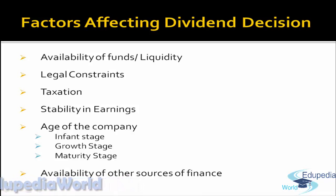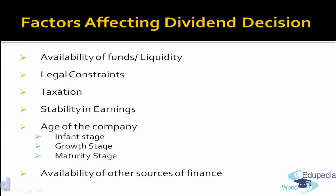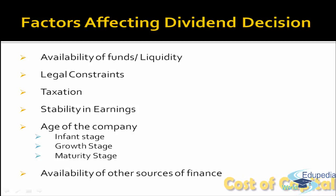Next factor is legal constraint. In companies there are certain constraints for distribution of dividend — how much percentage can be taken from general reserve, and it is to be provided only out of profits. SEBI has also imposed certain guidelines for distribution of dividend. Apart from that, listed companies enter into a listing agreement, so they have to comply with the listing agreement terms and conditions. Another factor is taxation. The company has to pay dividend distribution tax, and this is taken into consideration because dividend is an appropriation of profit, so dividend distribution tax cannot be claimed as an expense.